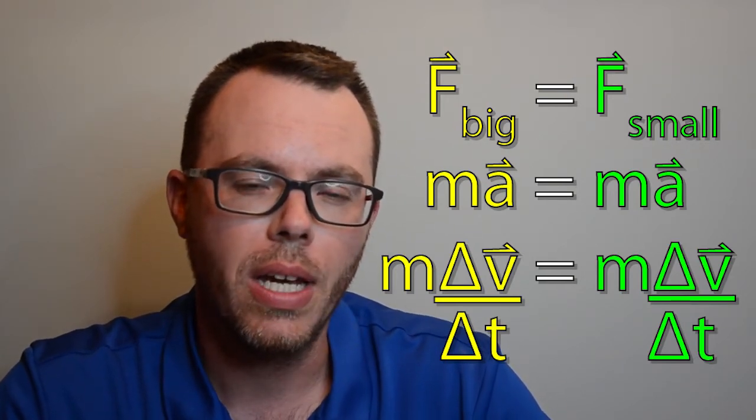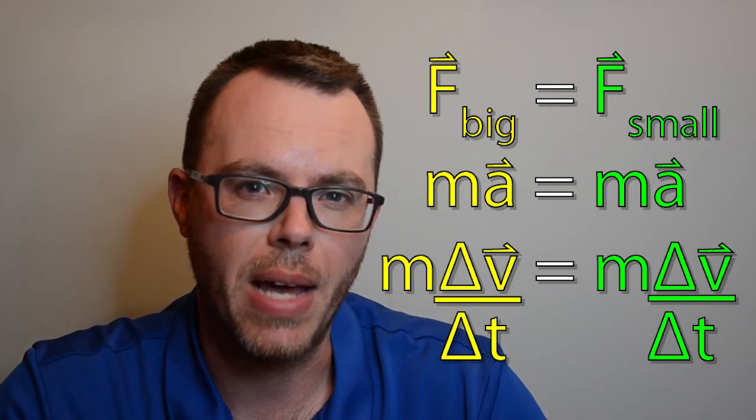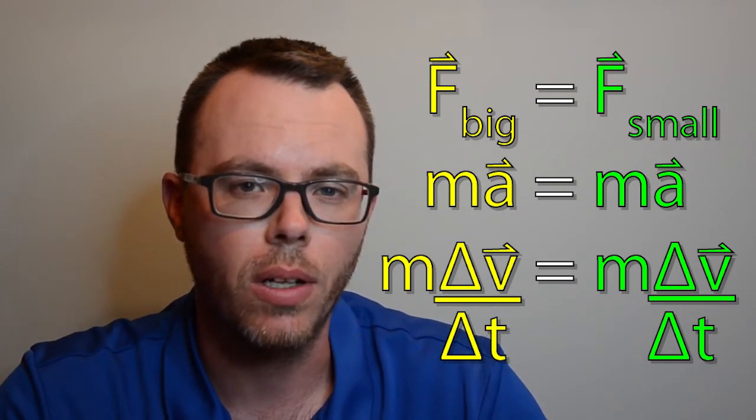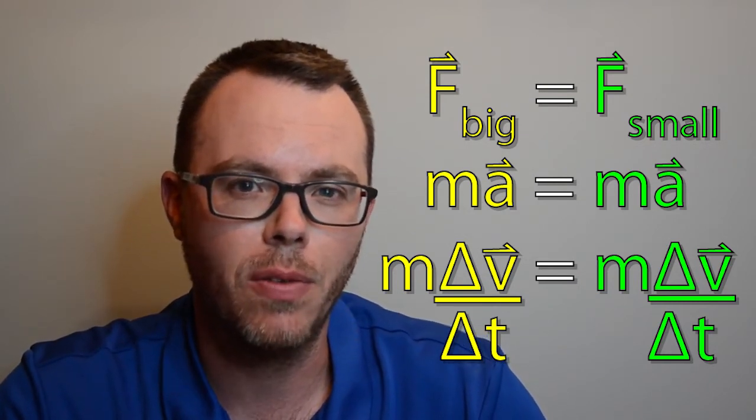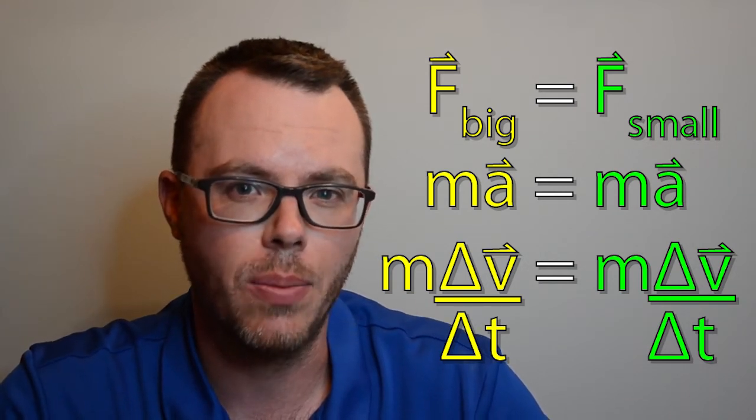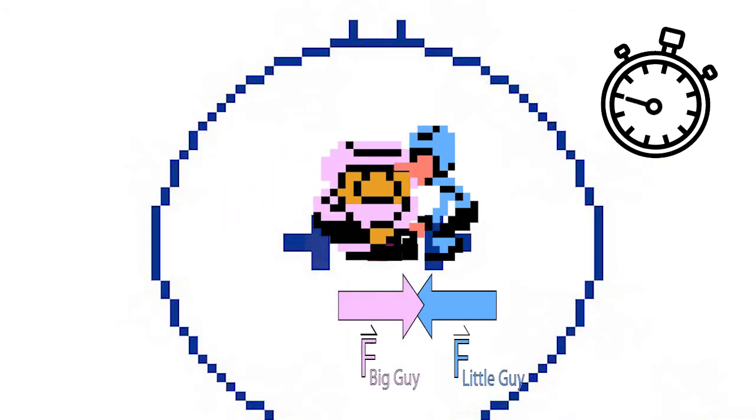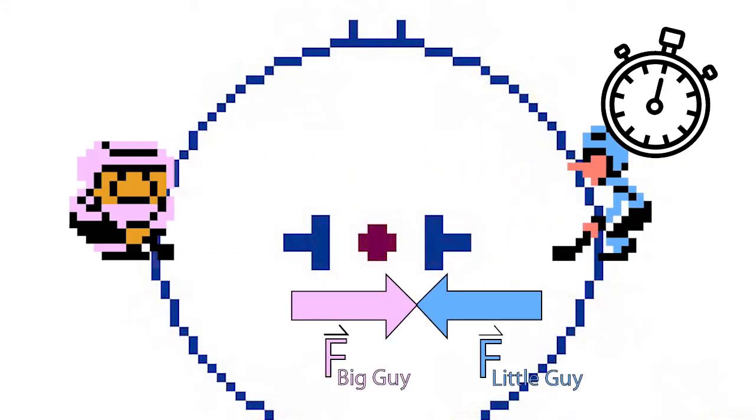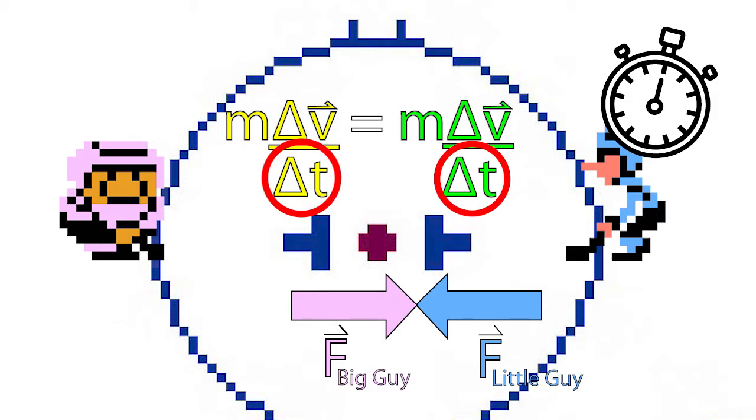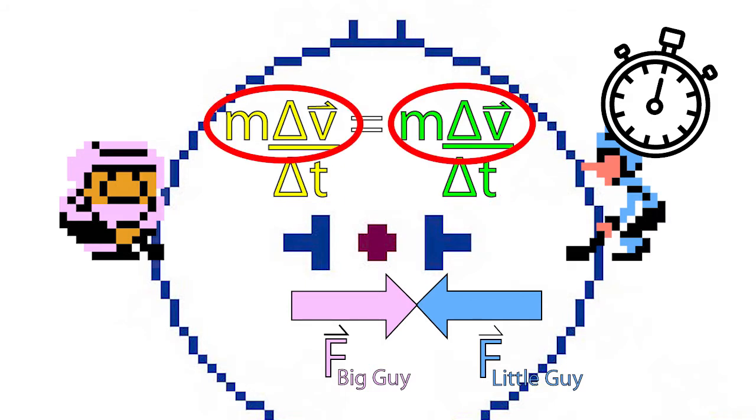Now this relationship holds even if those two players have different masses. The forces will still be equal, so that means the mass times the velocity divided by the time of each hockey player has to be equal as well. Now during the impact, each force takes place over the same period of time, so that means that the delta t term in each of these two equations is going to be exactly the same. This means that the mv from one side from the big hockey player and the mv from the other hockey player are going to be not necessarily the same numbers exactly, but they'll multiply together to give the same thing.